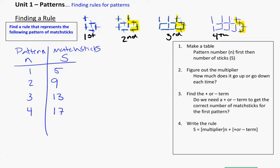Pay attention to this idea that we're adding one, two, three, four new sticks each time — you can see that's the pattern getting repeated. It's the thing being done over and over again. Looking at our table, I'm going from five to nine by adding four matchsticks on. Going from nine to thirteen, I'm adding four matchsticks on. And from thirteen to seventeen, I'm adding four matchsticks on.